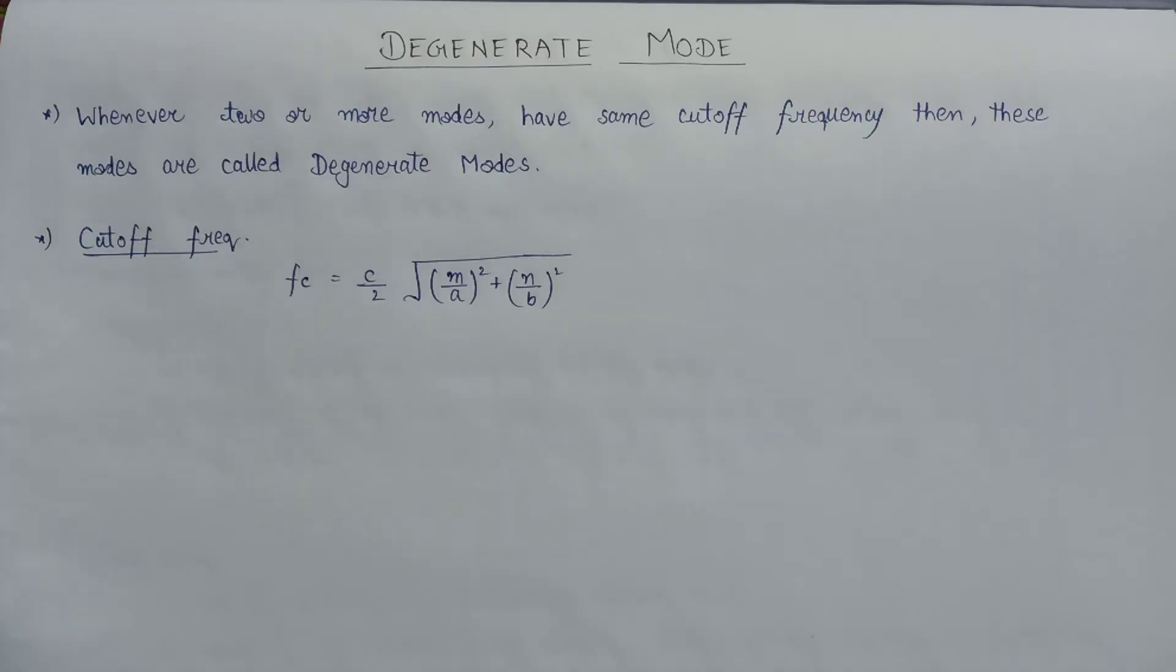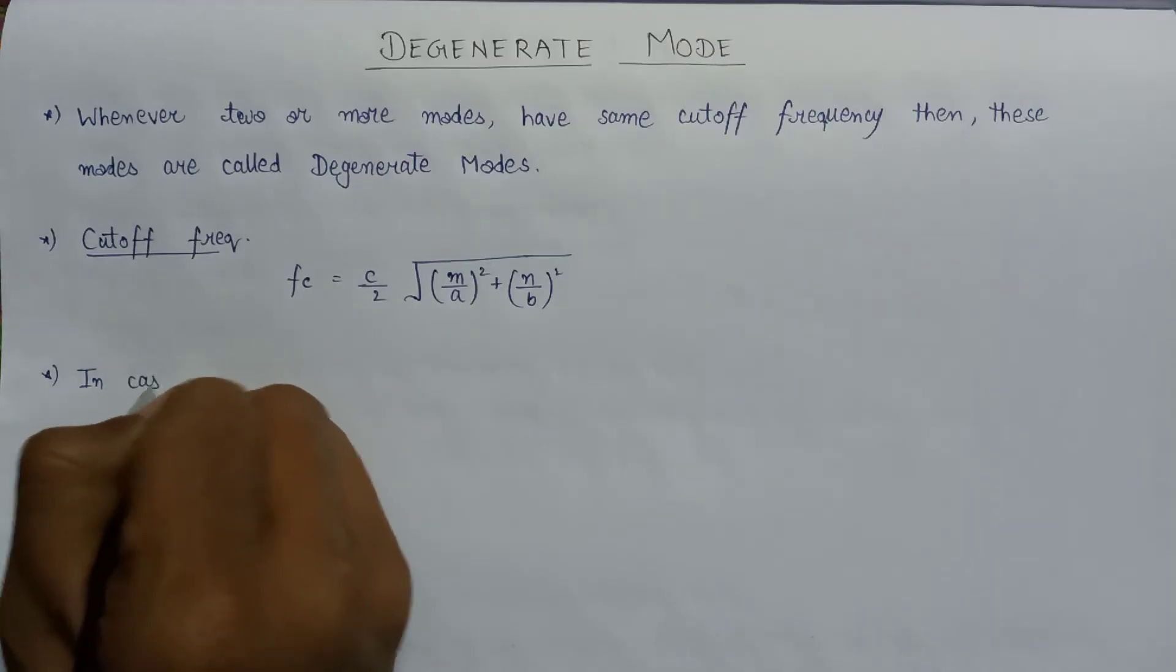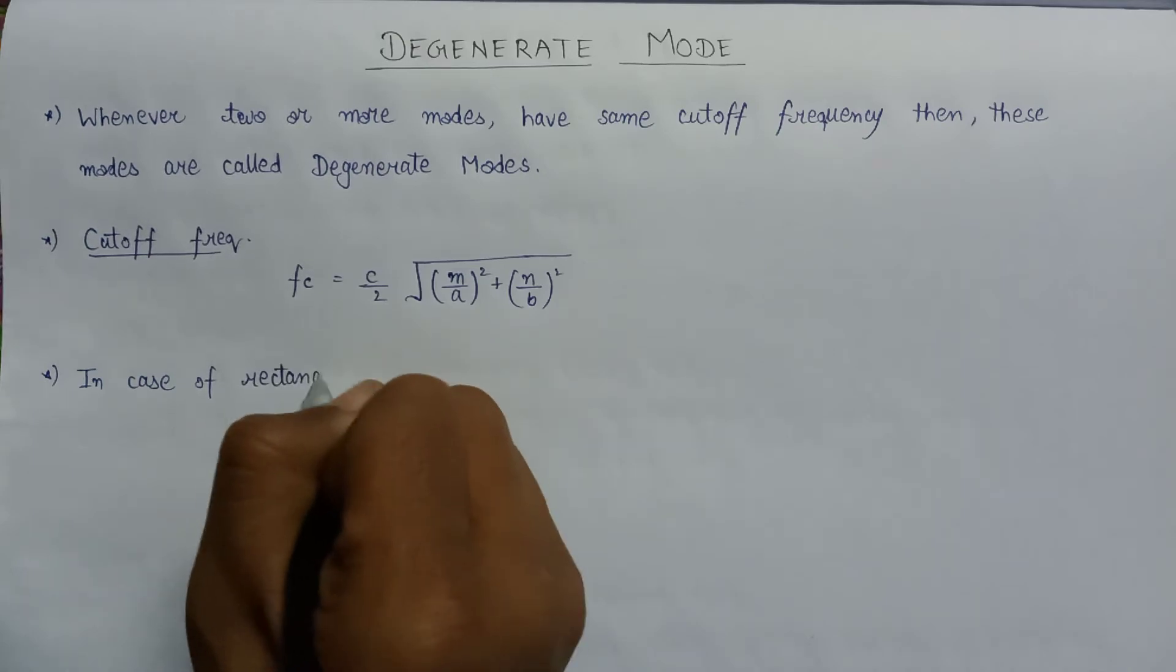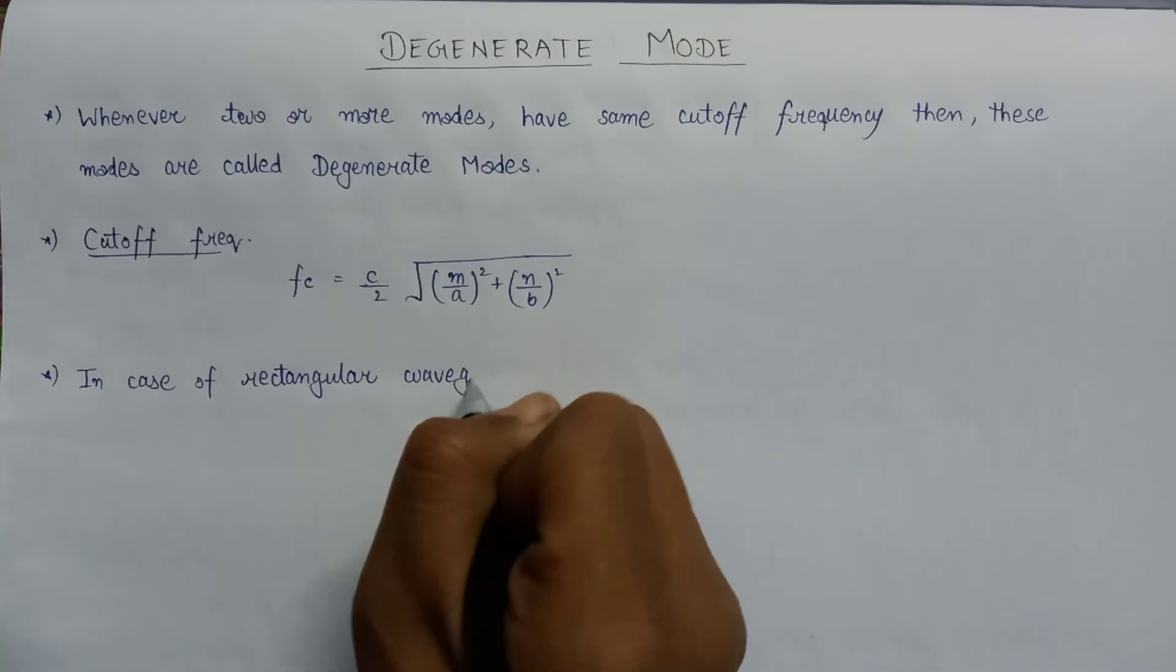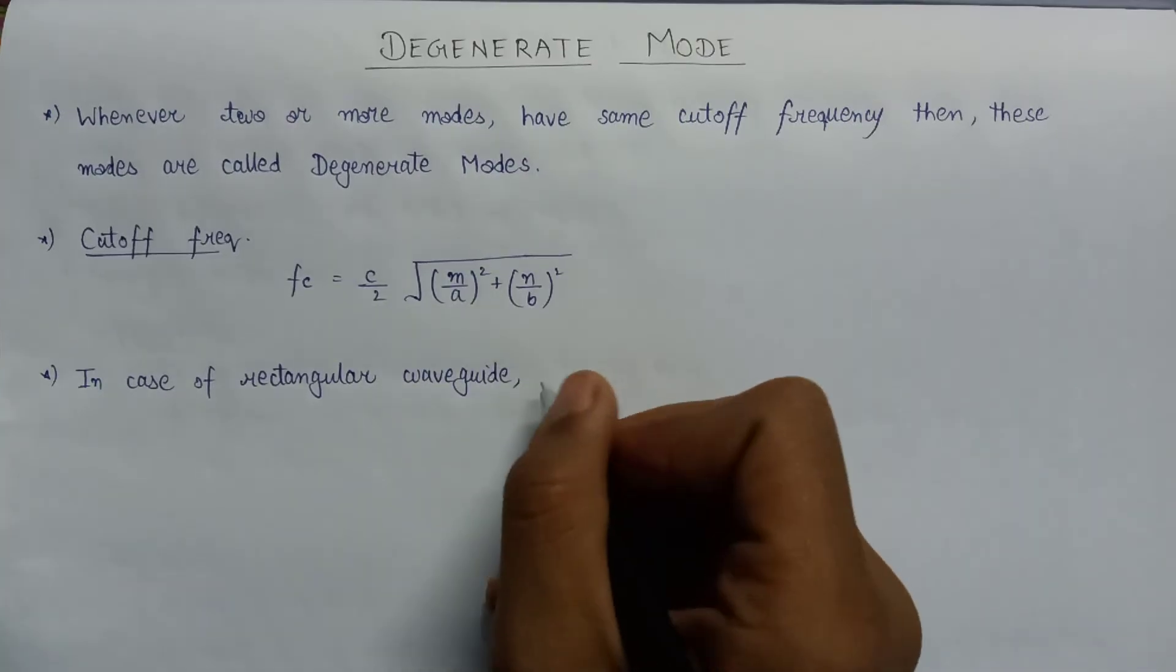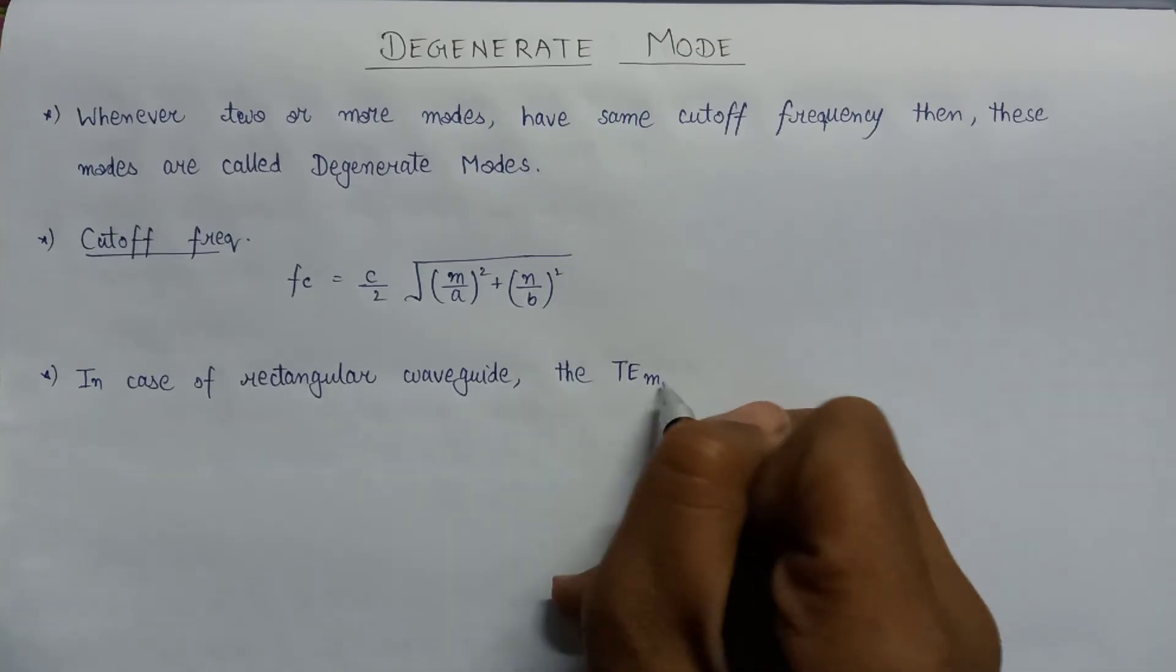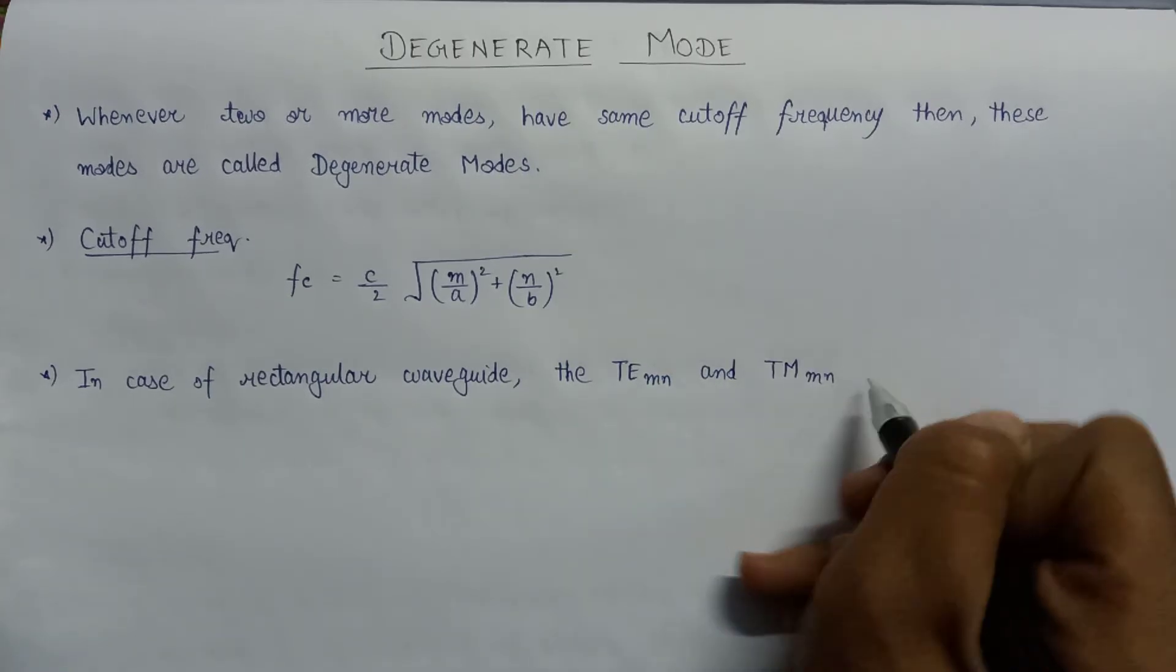Now in case of rectangular waveguide, the TE_mn mode and TM_mn mode are considered as degenerate modes.